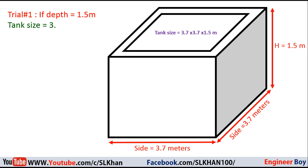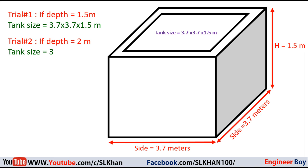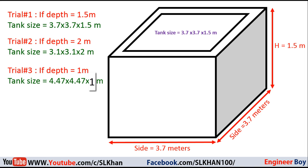We can try a few more depth assumptions. If we assume the depth of the tank is 2 meters, then the size will be 3.1 by 3.1 by 2 meters. Similarly, if we take 1 meter as the depth, the size of the tank becomes 4.47 by 4.47 by 1 meters. We can do many such trials to choose a suitable size for the structure.